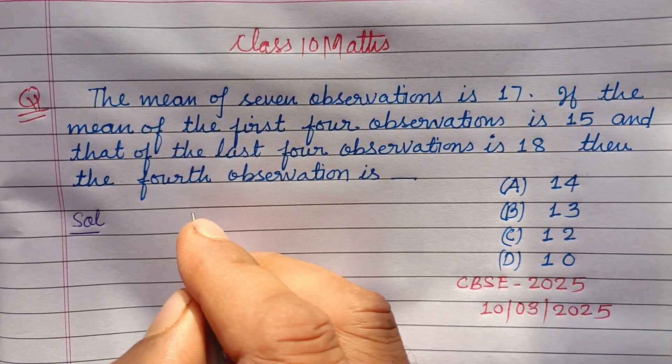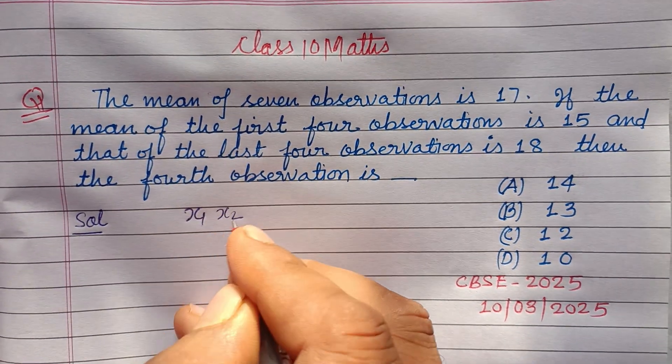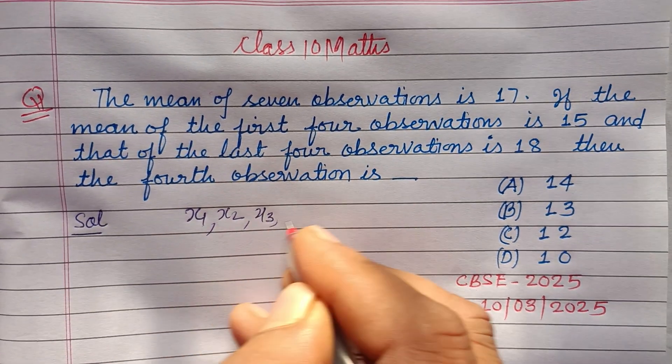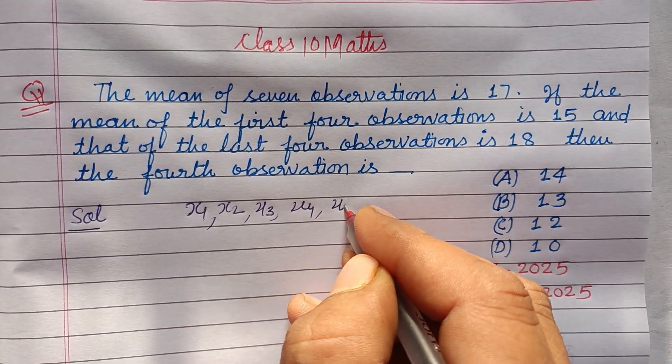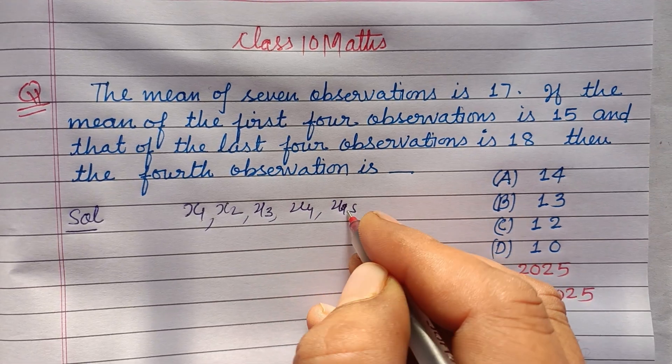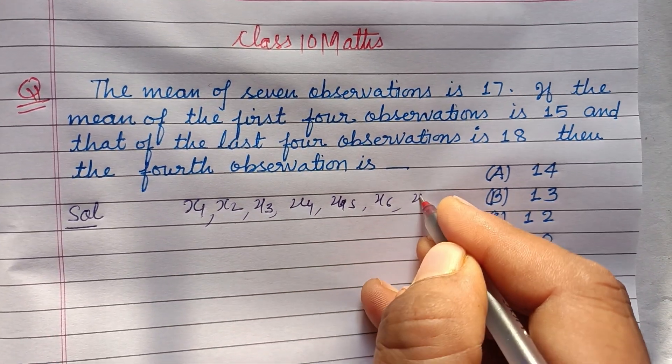So students, let 7 observations be x1, x2, x3, x4, x5, x6, and x7.